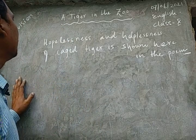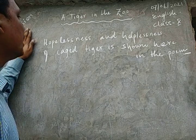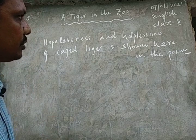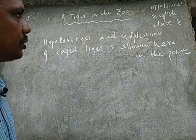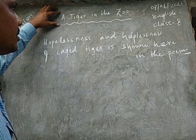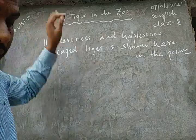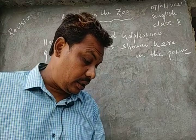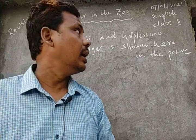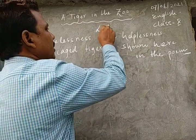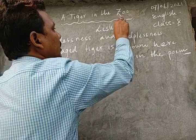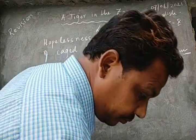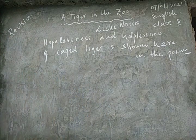Since we have completed our syllabus, let us revise. Now in the first lecture, we will revise 'A Tiger in the Zoo.' This is a poem written by the poet Leslie Norris. Leslie Norris is the poet.